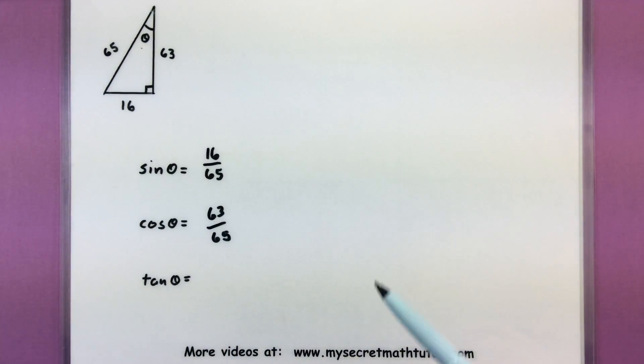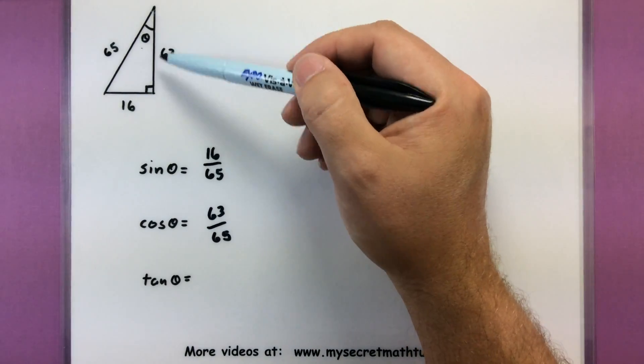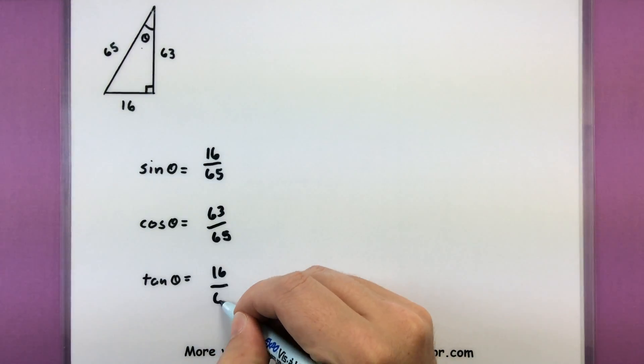And of course, one last thing we can find is tangent. That would be our opposite over the adjacent or sixteen over sixty-three.